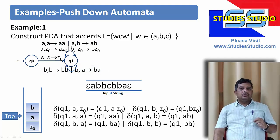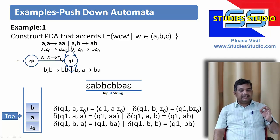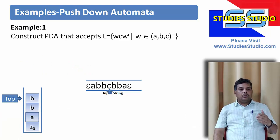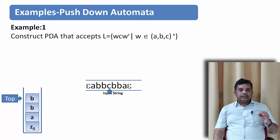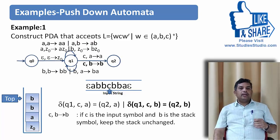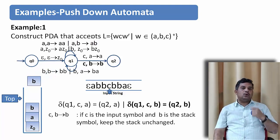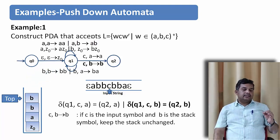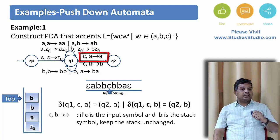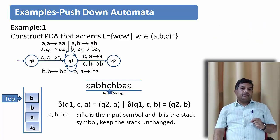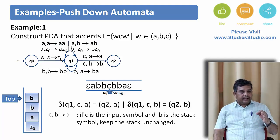We push all the symbols belonging to W onto the stack. Whenever c appears, we need to change our state. At this point we have a, b, b on the stack with b at the top. Now the input symbol is c. We pop b and push the same b back — we are not going to change the stack contents. It may also happen that a is at the top of the stack when c appears, so we handle c, a → a as well. Whatever stack symbol is present, we keep it unchanged when reading c, only changing the state.